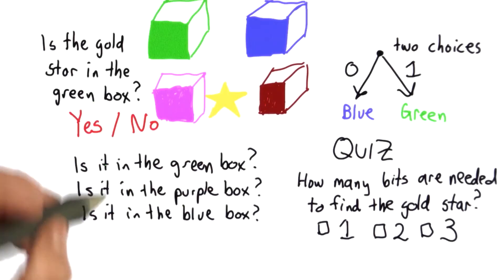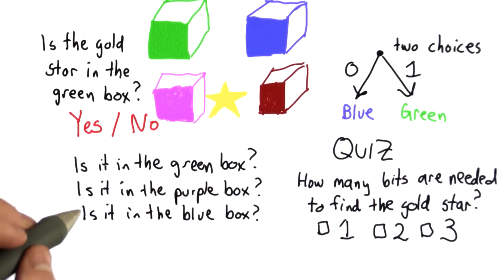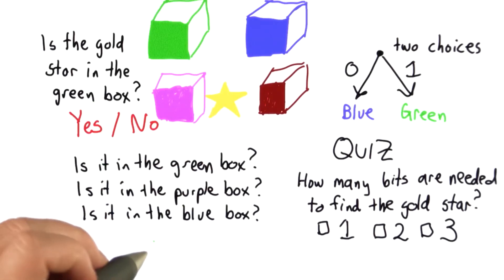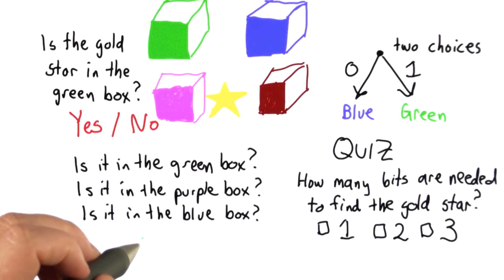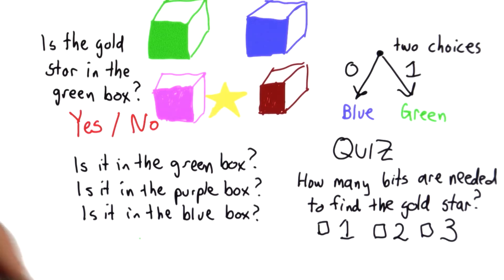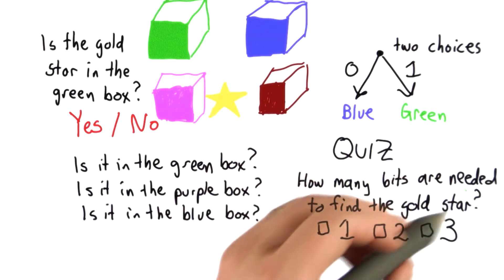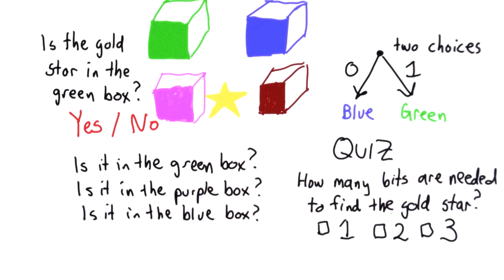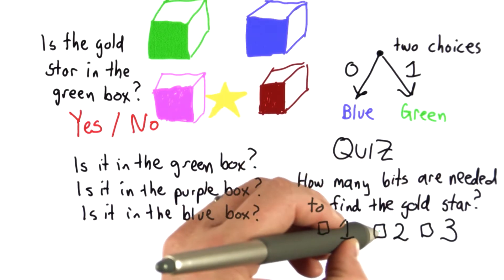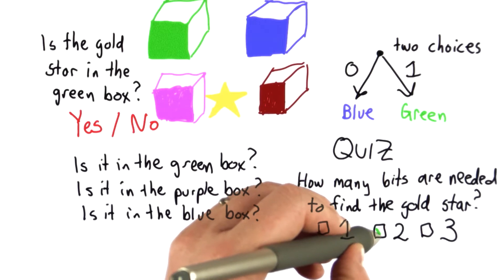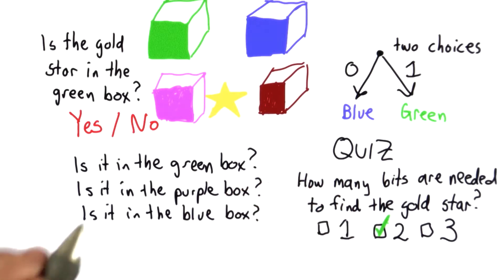So we saw that if we asked these three questions, we needed three questions to be sure that we would find the gold star by opening one box. But we don't need three questions. If we're a little smarter about our questions, we only need two.